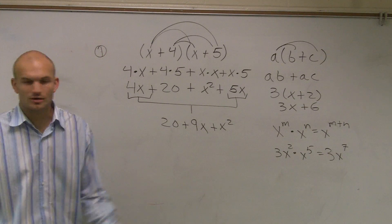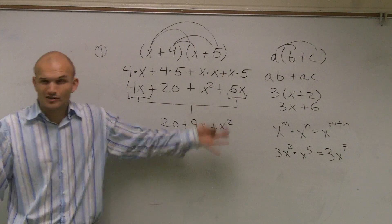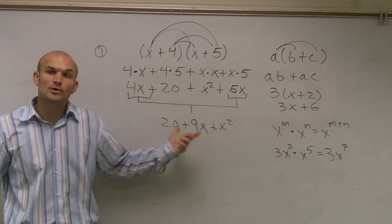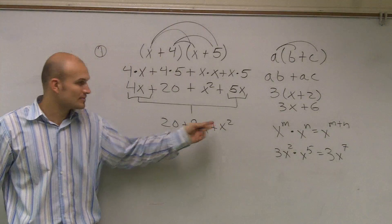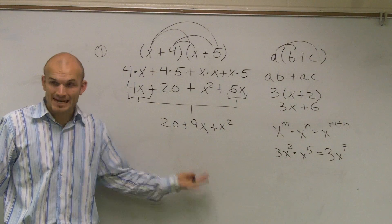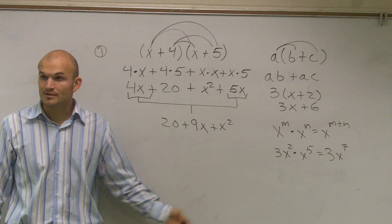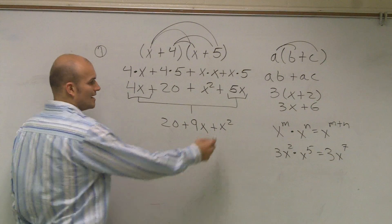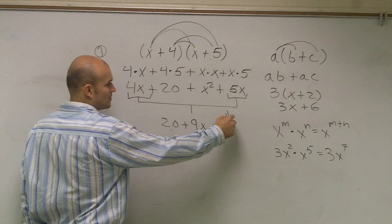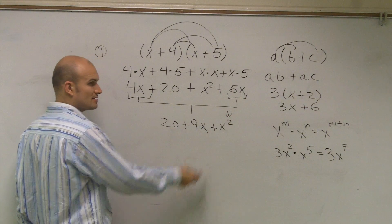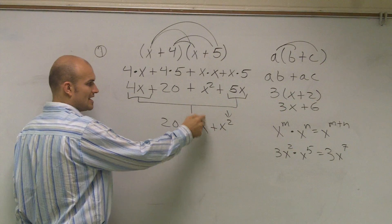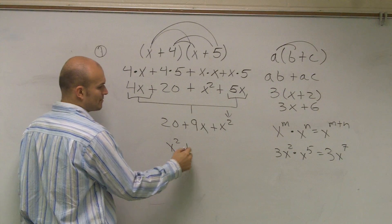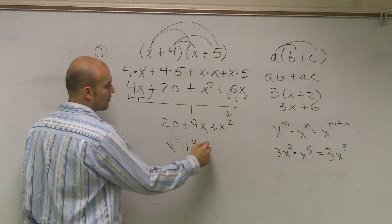I'm showing a lot of different steps here, but you don't need to show all of them. The main important thing is that your final answer is written in standard form — that's where your highest exponent comes first, then the next lowest, then the last. So your final answer should be written in standard form.